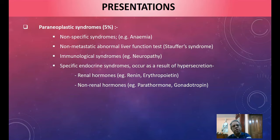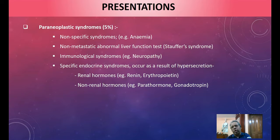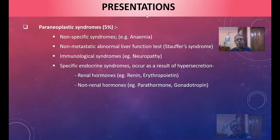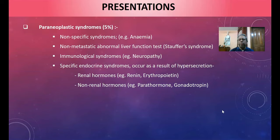Non-specific syndromes include anemia, non-metastatic abnormal liver function tests (Stauffer syndrome), and immunological syndromes such as neuropathy. Specific endocrine syndromes occur due to hypersecretion of renal hormones — renin and erythropoietin — or non-renal hormones like parathormone and gonadotropin, causing various syndromes.